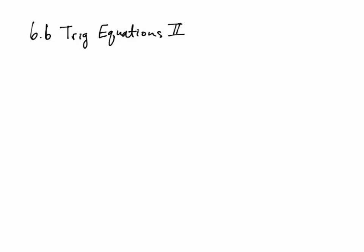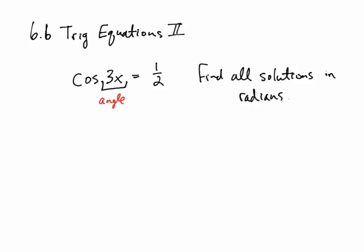This video covers the second section dealing with trig equations. In this section, all of the equations have an argument of the trig function that is a product or a sum, such as 3x here. This is still an angle — we're asking cosine of what angle is equal to 1/2. However, the angle we're solving for, x, is being multiplied by 3 in this equation. The instructions say to find all solutions in radians.